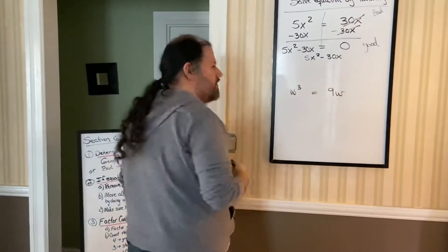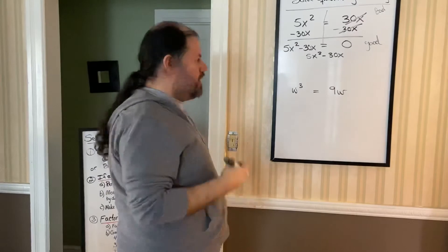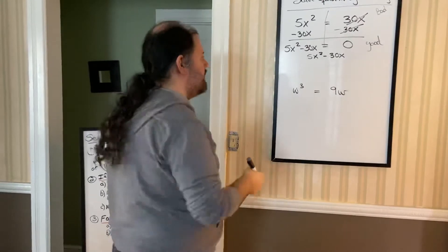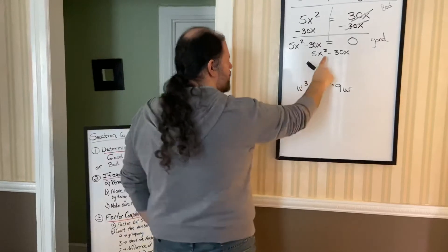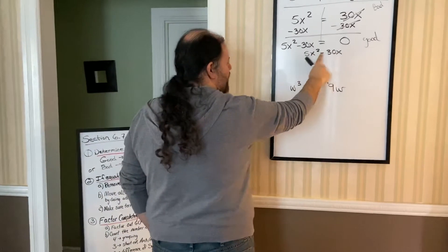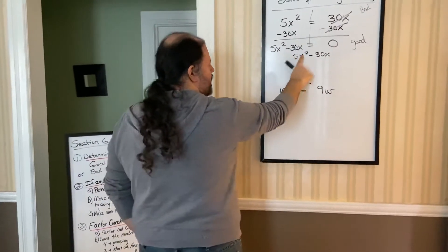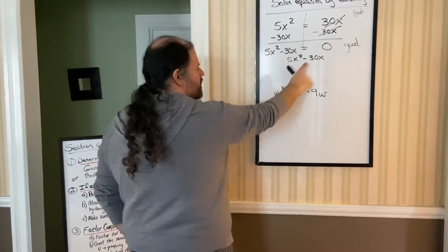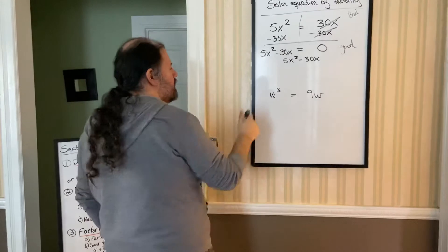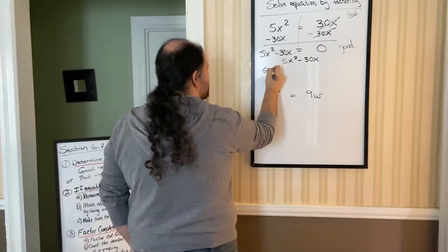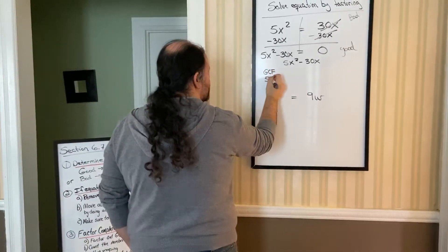How do you do any type of factoring? Again, look to see if there's a GCF. Since this is two terms, don't go right into difference of squares. Say to yourself, oh, they both have an x in common, and they both have a 5. Because remember, 30 is 2 times 3 times 5. So we're going to take out what we call the GCF. Remember, we always look for that first.